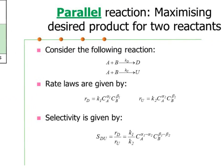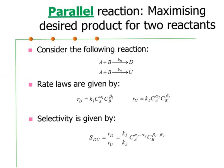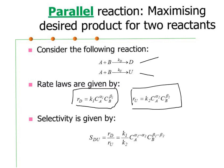Now we consider two reactants reacting together, producing one desired reaction and one undesired reaction. If we write the rate laws, we have RD equals K1 · CA^(alpha1) · CB^(beta1), and RU for the undesired reaction equals K2 · CA^(alpha2) · CB^(beta2). Rearranging in terms of instantaneous selectivity, RD divided by RU, we get K1 over K2 · CA^(alpha1 - alpha2) · CB^(beta1 - beta2).